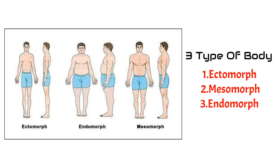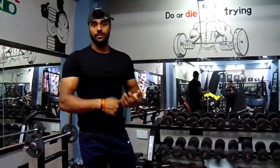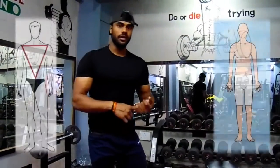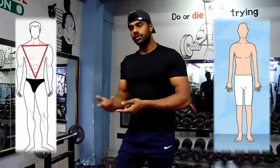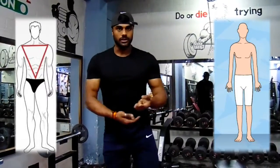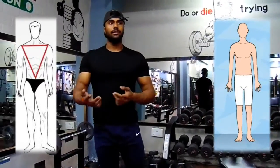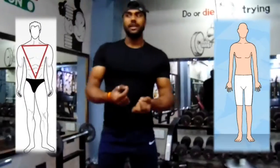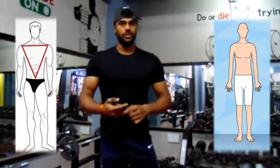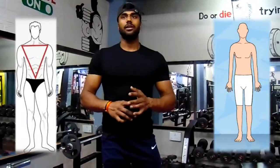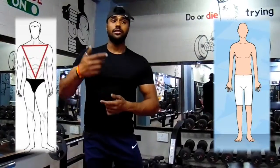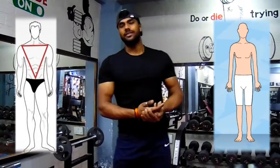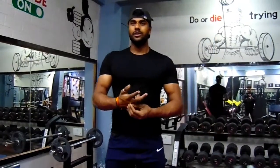The three types are Ectomorph, Endomorph, and Mesomorph. Let's talk about the first body type: Ectomorph. Ectomorph is a type of body that tends to be very fast. When they are doing gym, they need to gain a lot of weight. They have a lot of time to grow and a lot of muscle growing, but the muscle is not growing easily. So it takes a lot of time to get more muscle, even after doing a lot of exercise and diet.